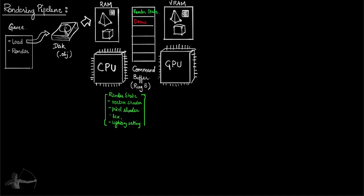Once the render state is set, we can start drawing all the meshes that use the same state. For example, if a cube uses the same vertex and pixel shaders, materials, textures, and lighting settings as the pyramid, it will be drawn without setting the render state again. When a mesh using a different render state comes in, the state is set again. Setting the state is a much heavier operation than the draw call itself, which is why batching occurs. Unity batches together objects that use the same shaders, materials, and textures so the render state is set once and objects are drawn in sequence. The operation of drawing the meshes is called a draw call.